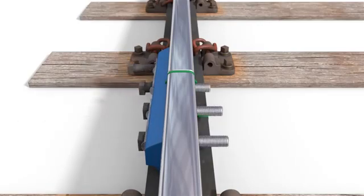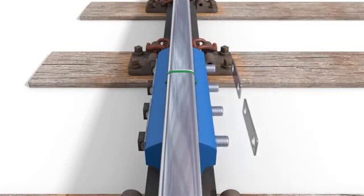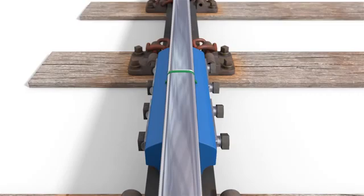Insert the bolts through the insulated fish plate and the rail. Place the second plate over the bolts and secure washers and nuts. The correct sized bolts must be used as fitting of undersized bolts in cold weather could cause an IRJ failure in the warmer weather.